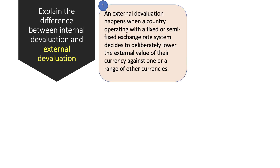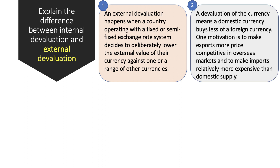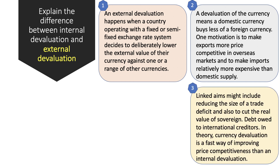External devaluation happens with a country operating with a fixed or semi-fixed exchange rate system, and it's when they deliberately opt to reduce or cut the external value of their currency against a range of other currencies. That means their currency can buy less of a foreign currency, but exports from this country become more price competitive in overseas markets, and imports become relatively more expensive. The aims include stimulating exports, reducing the size of a trade deficit, and reducing the real value of sovereign debt owed to creditors.